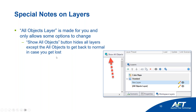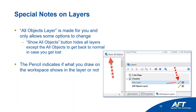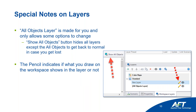Some special notes: the all objects layer has limited edits. If you get lost — you've made a bunch of layers and don't know what's actually in your model because you're hiding things — press the 'show all objects' button. It turns off all other layers and shows just the all objects layer — it's a way to get back home. The pencil indicates whether what you draw on the workspace will be added to that layer. If the pencil is on and you drag a pump onto the workspace, it will be attached to that layer.